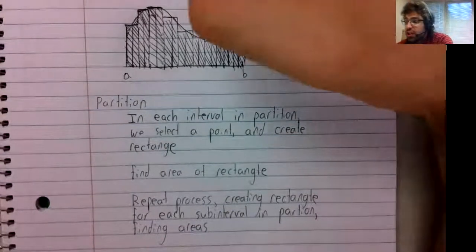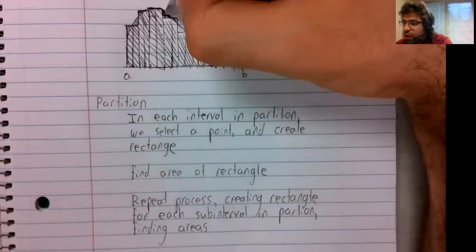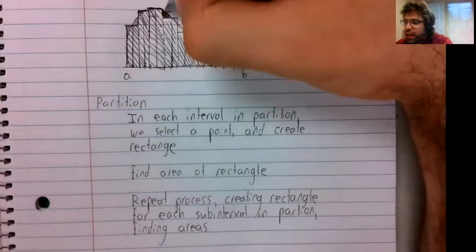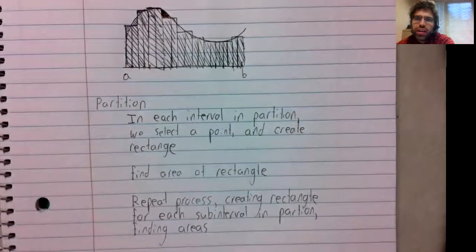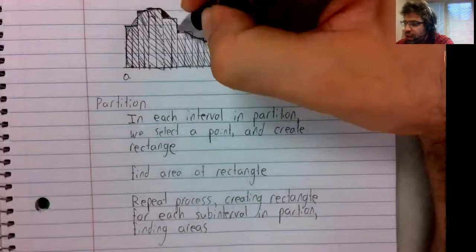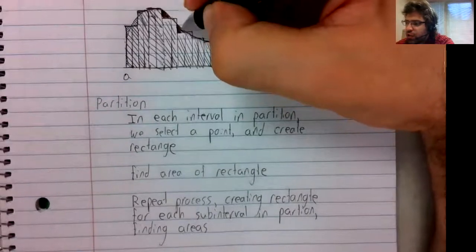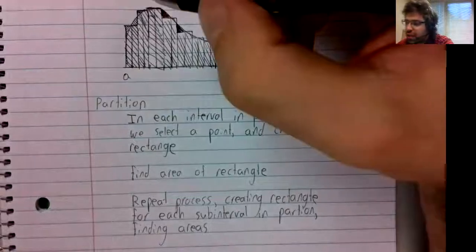It's definitely not perfect. You can see this is area that's under the curve but not contained in any rectangle. This is area under the curve that's not contained in any rectangle.